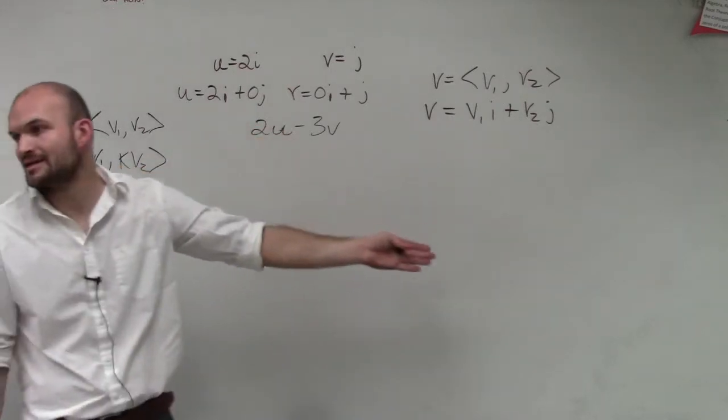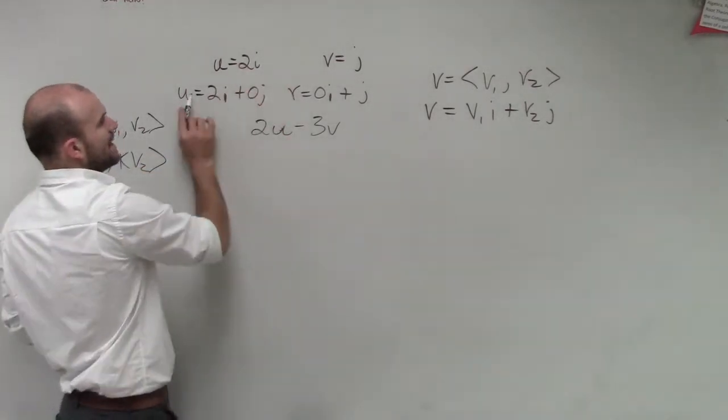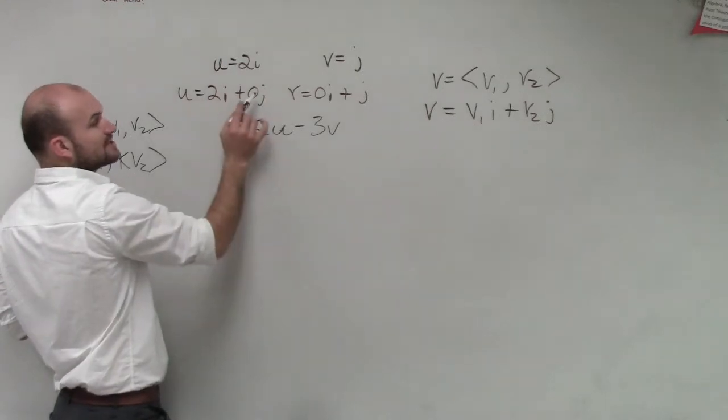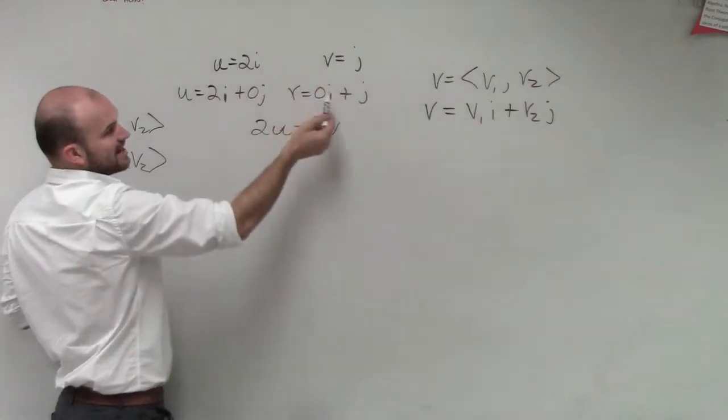Well, now we just have a linear combination, but guess what, guys? It's going to be the same thing. So I rewrote my 2i as 2i plus 0j, and my v equals j as 0i plus j.